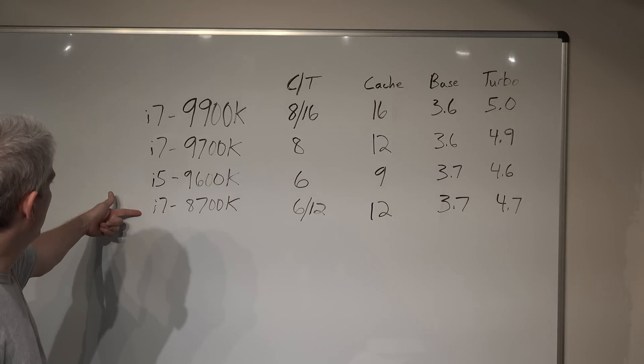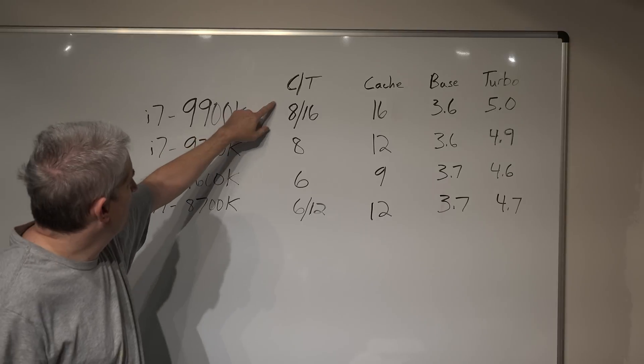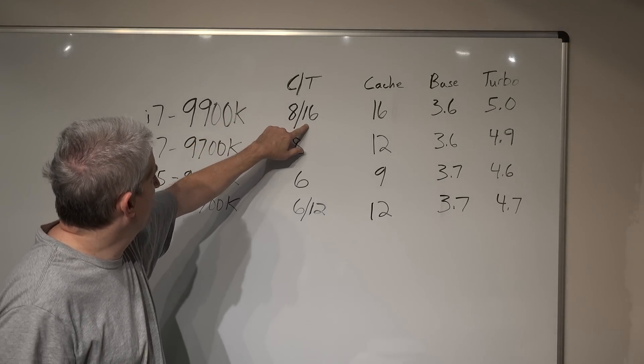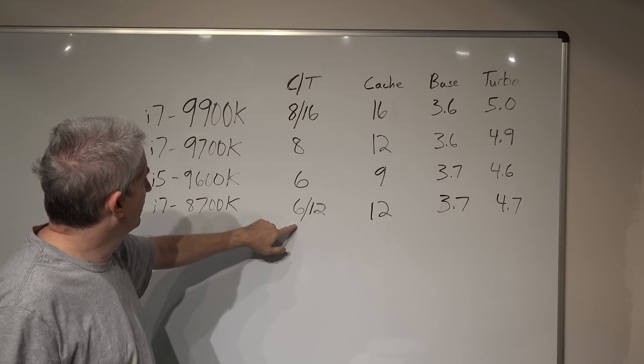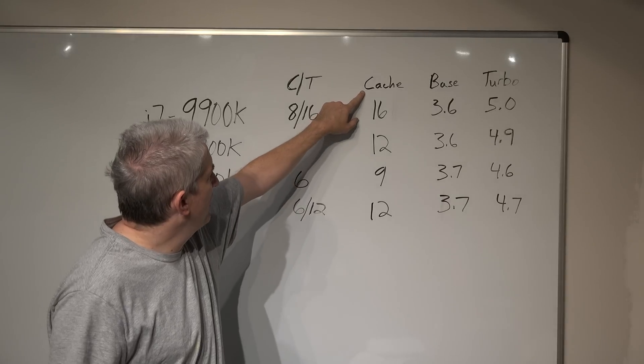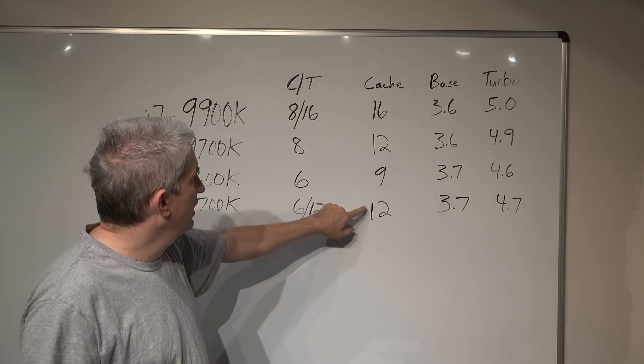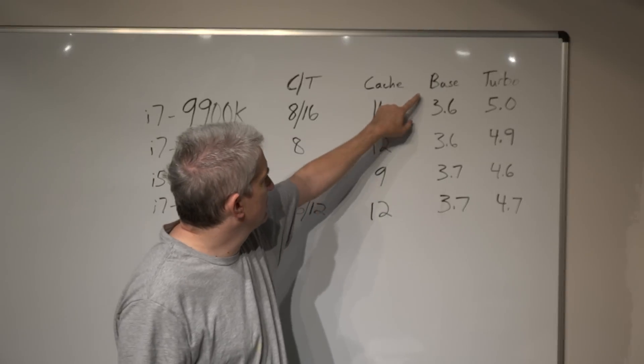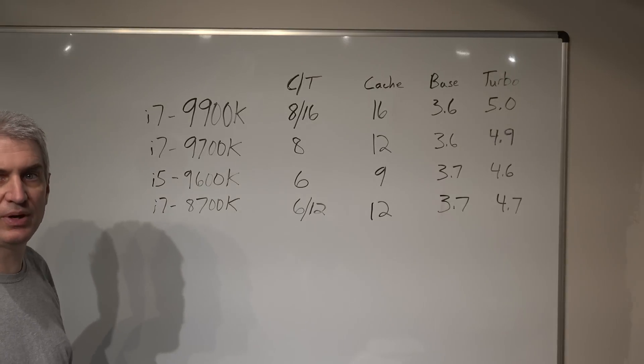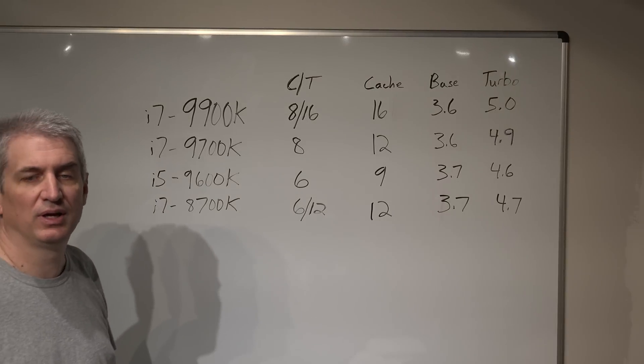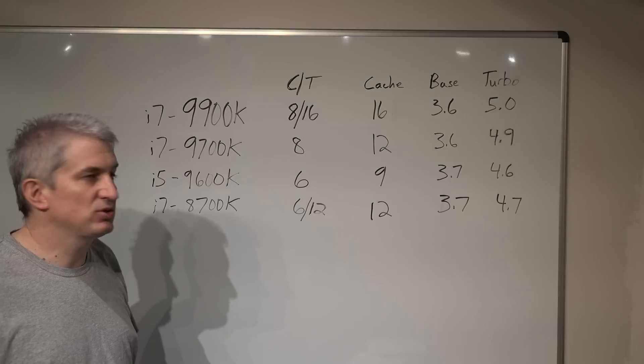So I've written the information up here on the board. Here we have the processors by model number. Here we have the number of cores and threads. We have the amount of L3 cache here in megabytes. We have also the base frequency and what's known as the turbo frequency. I'm going to go through all of these different categories and talk about them.